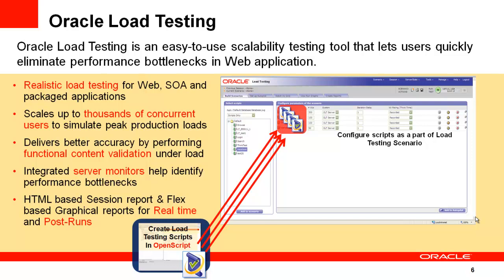Oracle Load Testing delivers accurate load by performing validation against the content returned from the server — not just sending HTTP requests, but actually checking that the correct pages come back. It also has built-in server monitoring capability. During the load test you can monitor performance metrics from the back-end application structure, such as whether the application server or database server is overloaded, CPU usage, and memory consumption, all stored in the Oracle database to identify bottlenecks under load.